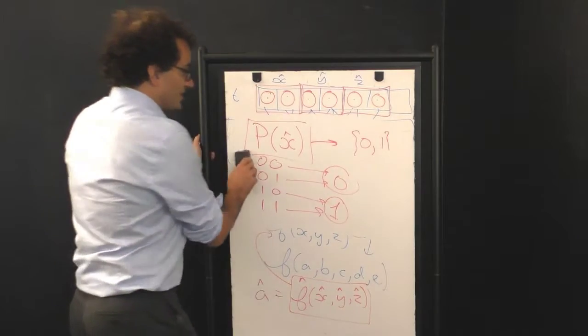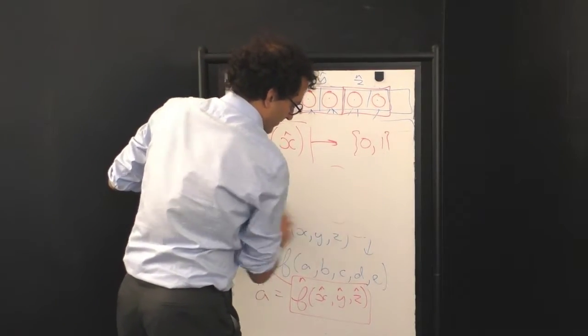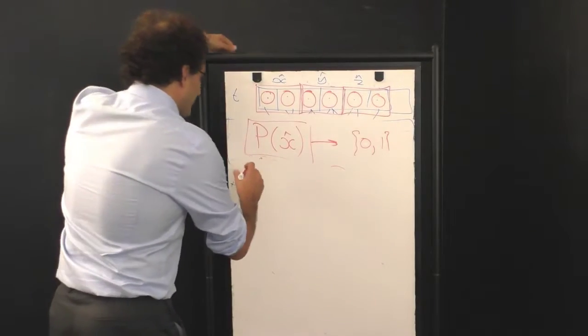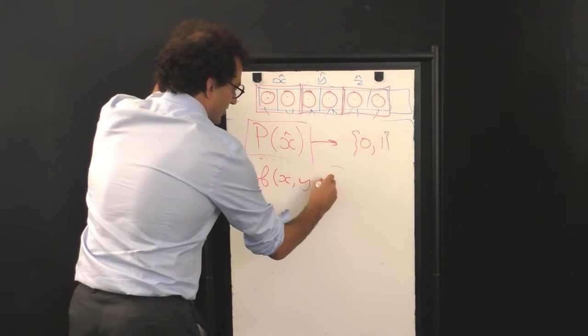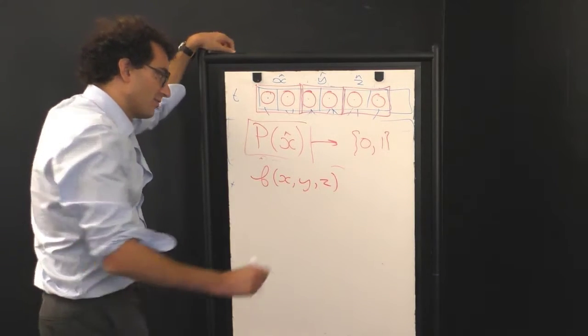So, now that we've introduced the projection operator, let's see where we are. We began with the original evolution law of the fine-grained cellular automata, f of x, y, and z.